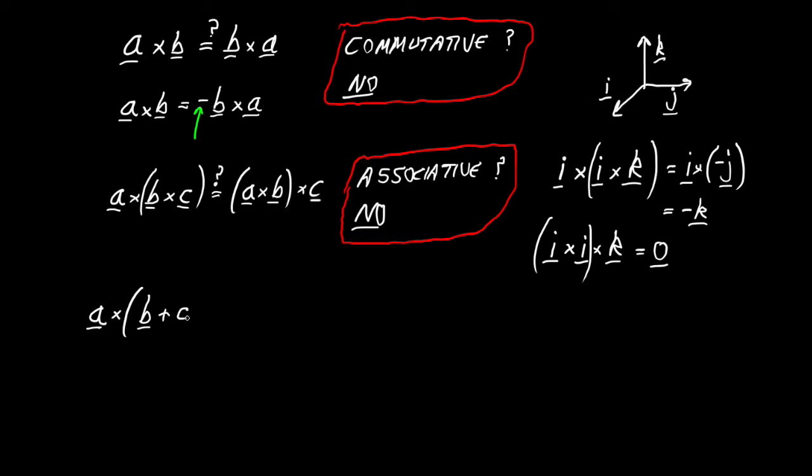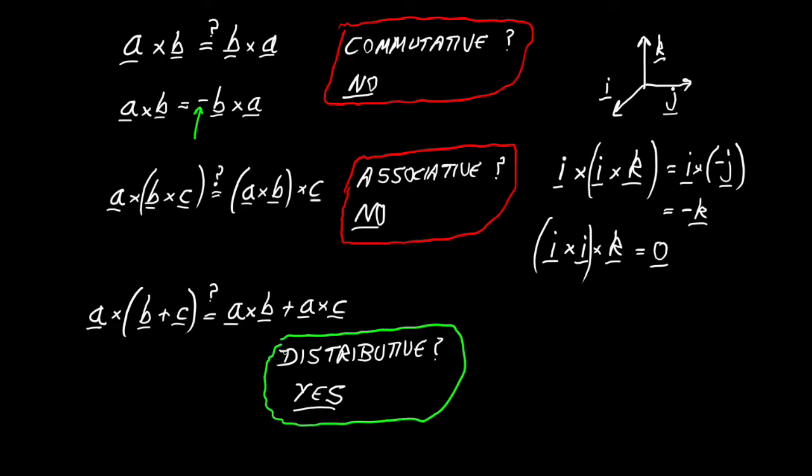Finally, we could ask about the distributive property. So are we allowed to multiply through using the cross product if the second object in our cross product is a sum of two vectors? Can we do this? Well, this at last is something that we are going to be allowed to do. It is the distributive property and the cross product operation. The vector product does have this property. We are allowed to do that, but of course, we must make sure to keep the order the same. Okay, so I think that's everything for this video.